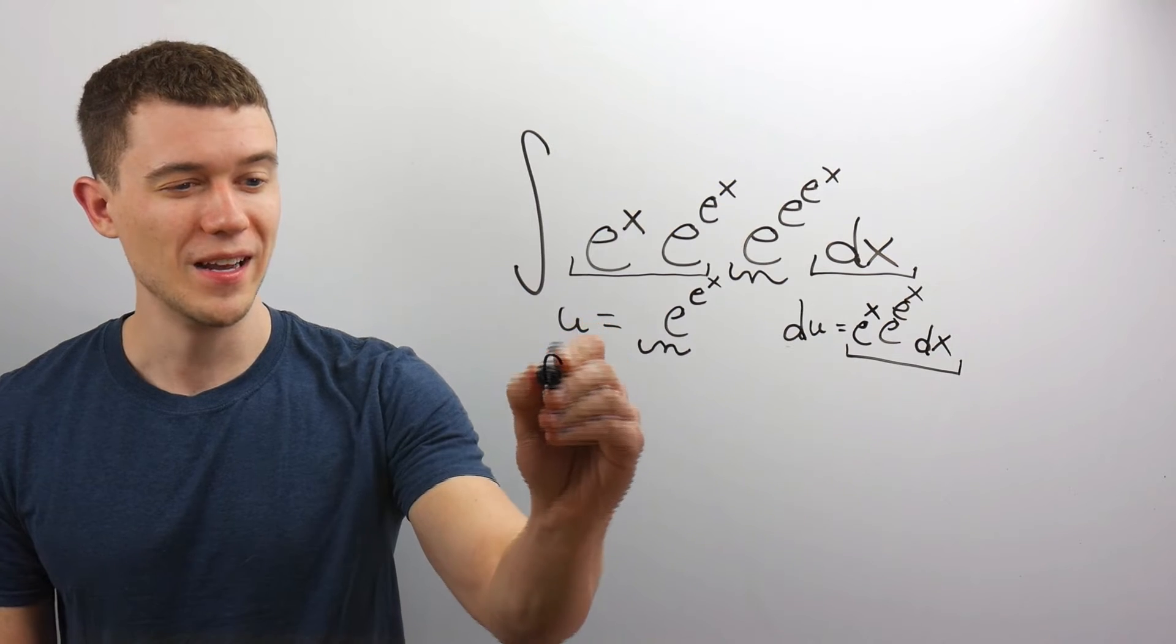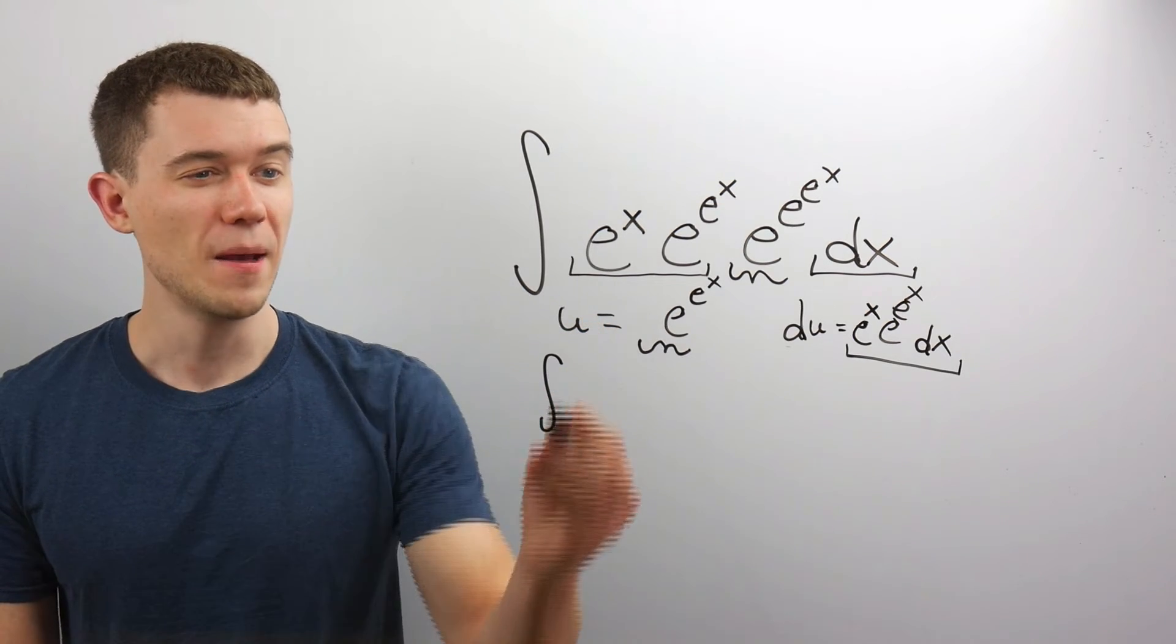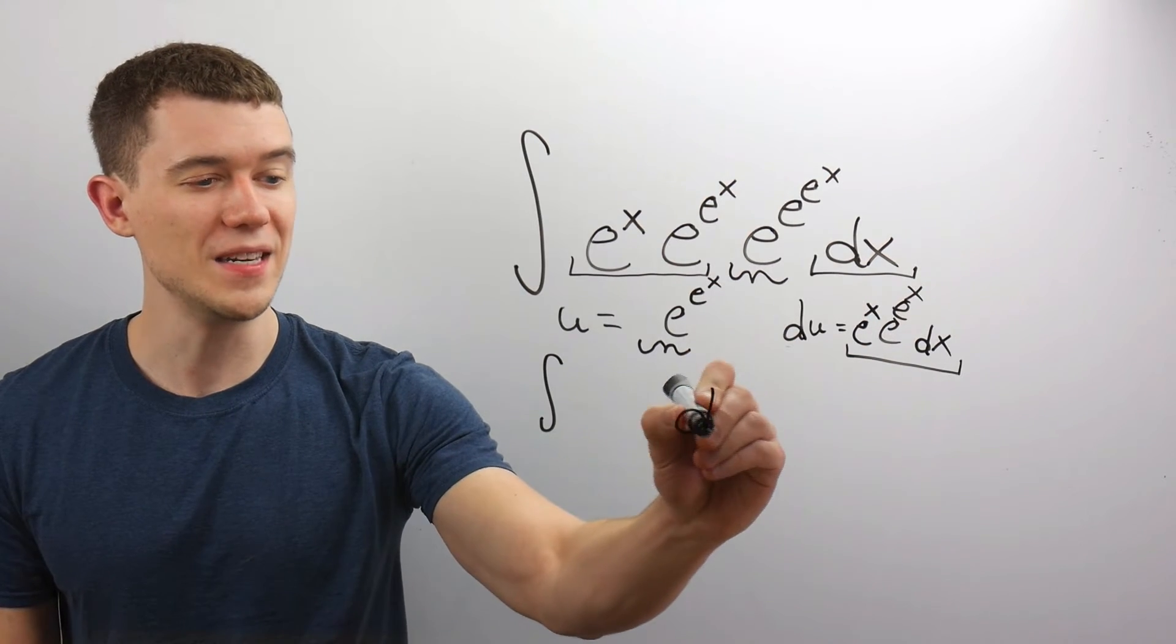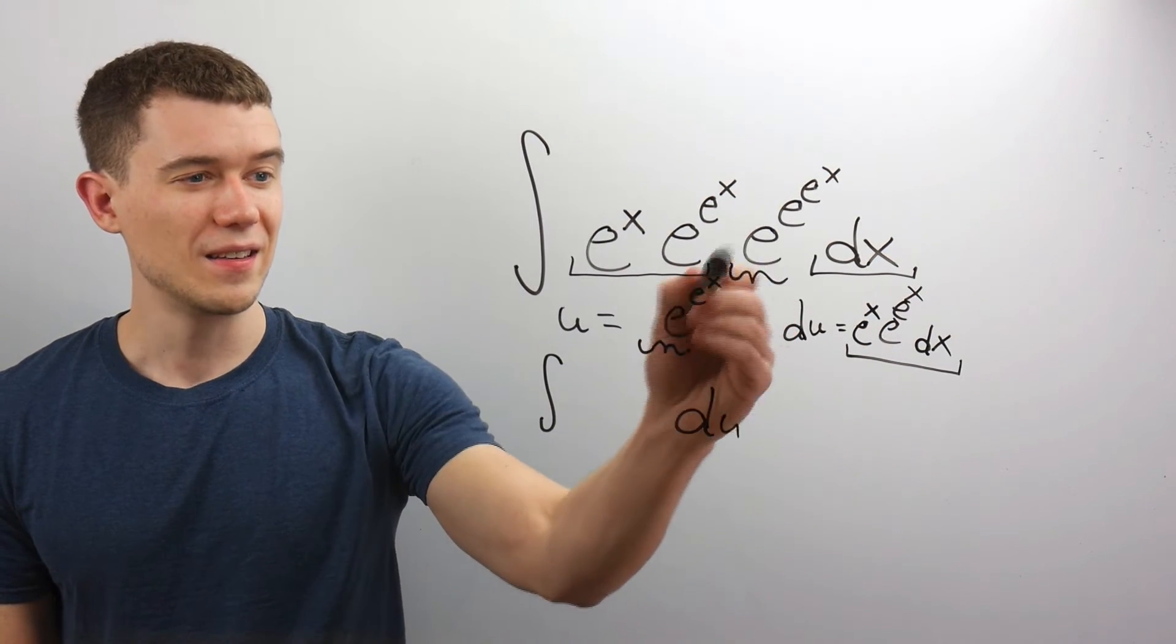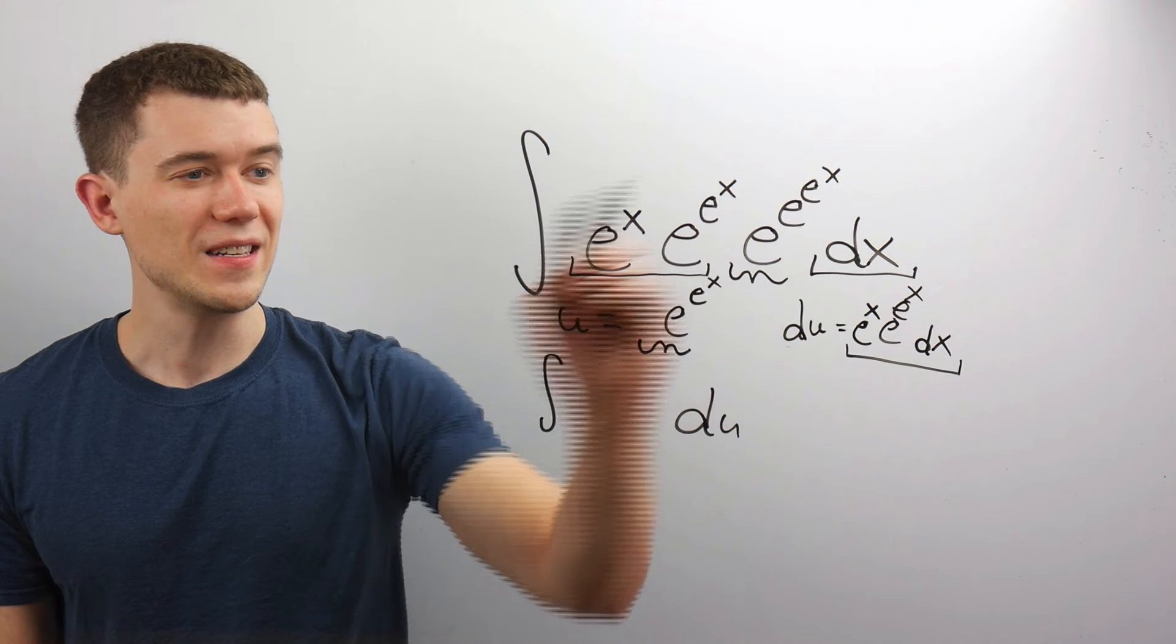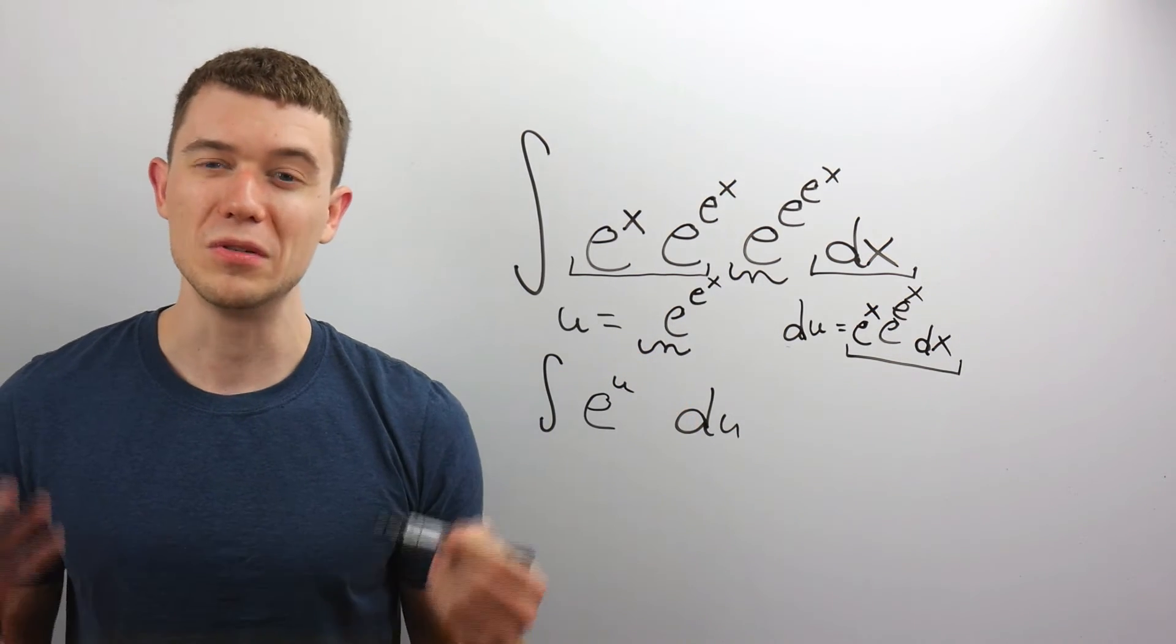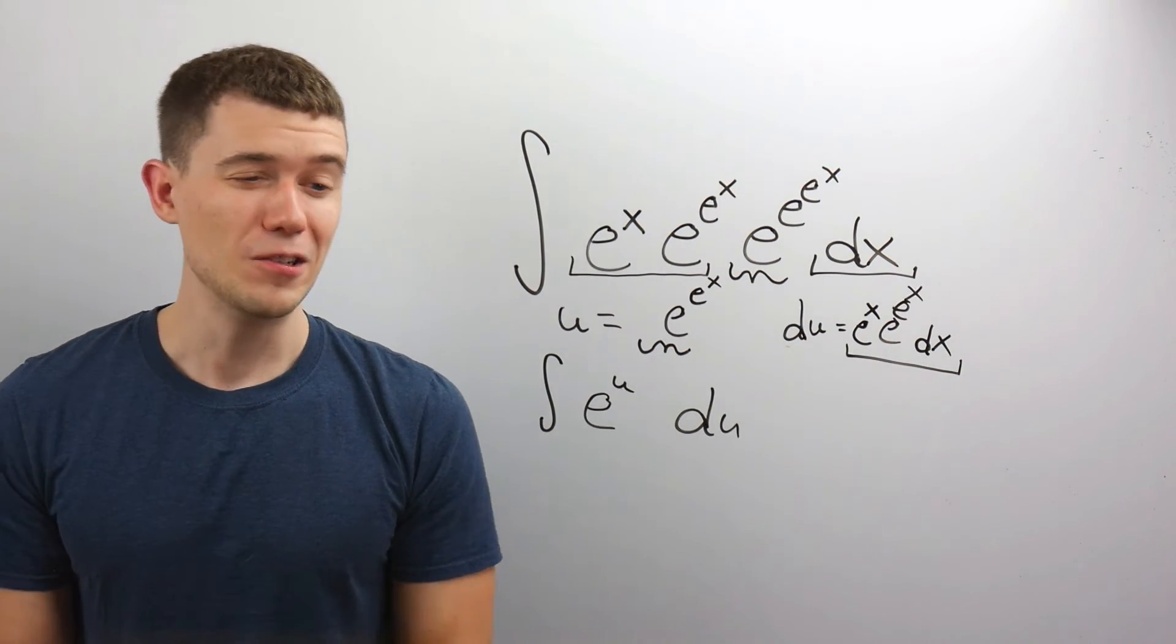It looks a lot more complicated, but it really just comes down to this: the e^x, the e^(e^x), and the dx — that becomes du. And e^(e^x) was in the exponent of my e. So our integrand reduces to e^u du.